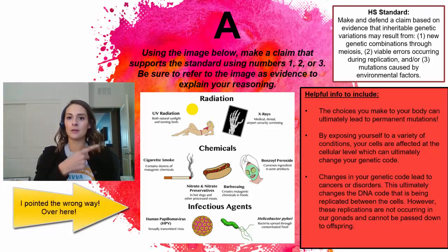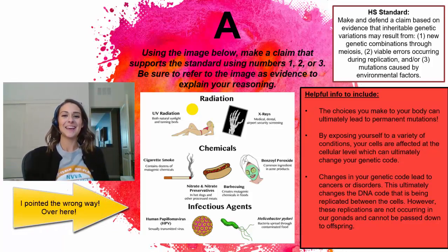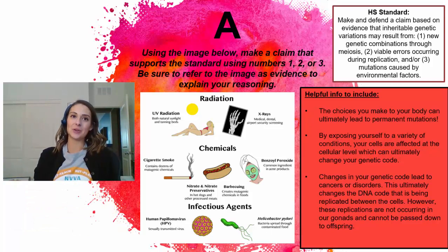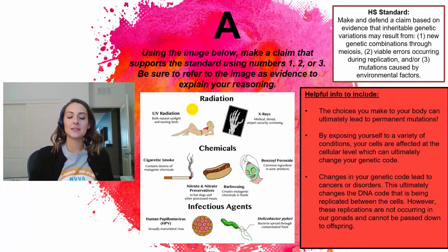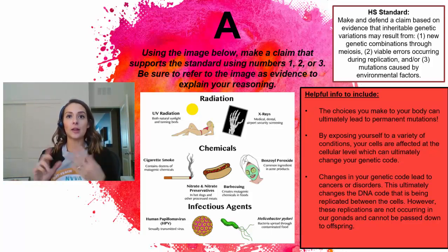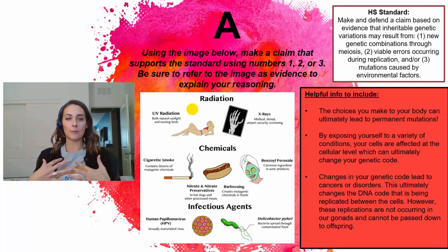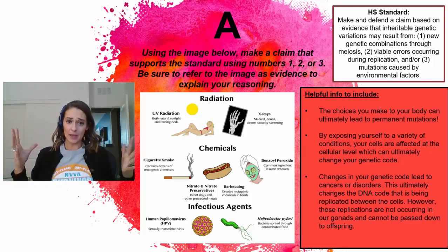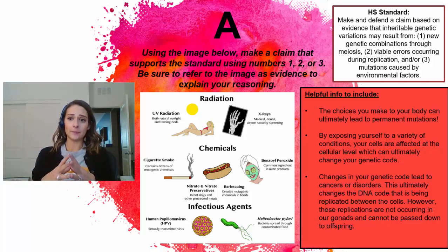On the right side of the screen is helpful info to include in your explanation. Looking at the picture — we've seen this in Class Connect before — we're looking at radiation, chemicals, and infectious agents. These are all external things that we apply or get into our bodies that can actually affect us at the cellular level.